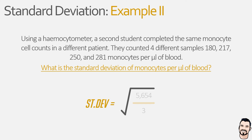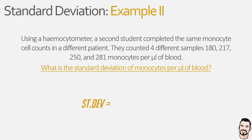At this point, just like in our previous example, we have actually calculated the sample variance value and could report this as a measure of dispersion. However, we want to complete our equation and find the standard deviation by calculating the square root of this value, which is 43.4, or more specifically, 43.4 monocytes per microlitre.